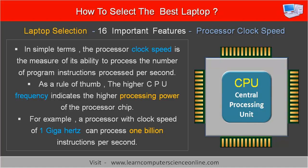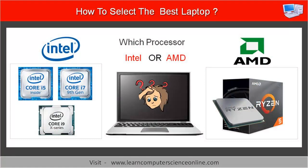The current generation of both Intel and AMD processor chips are clocking at the rate of three gigahertz to five gigahertz, depending upon the processor model.